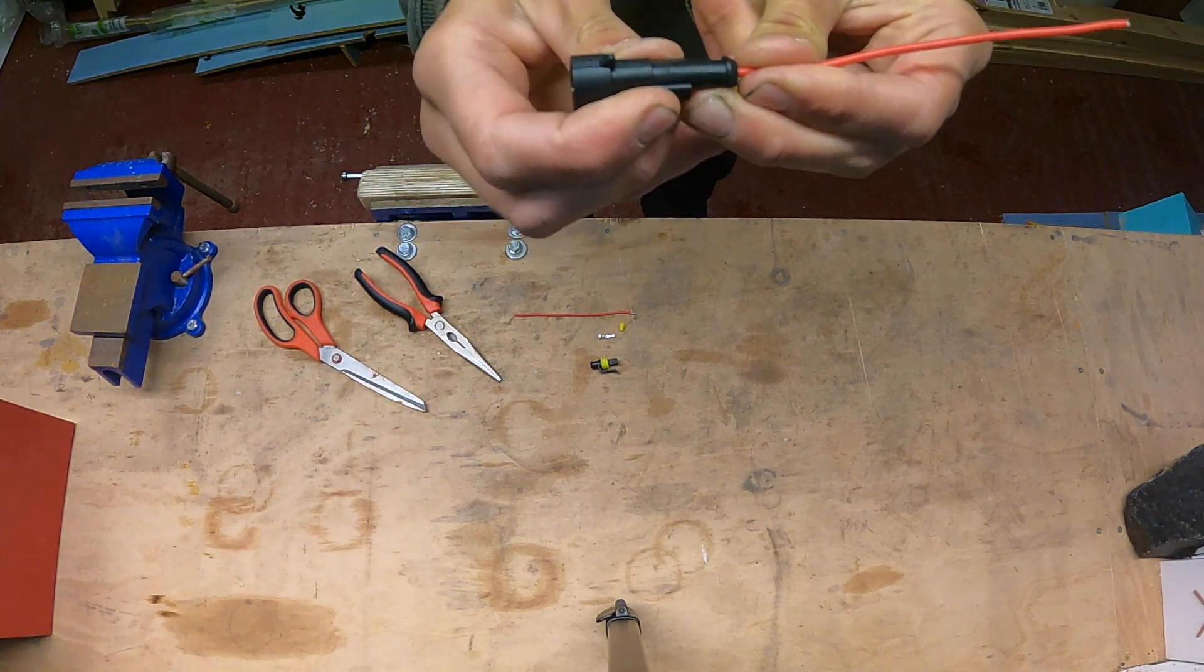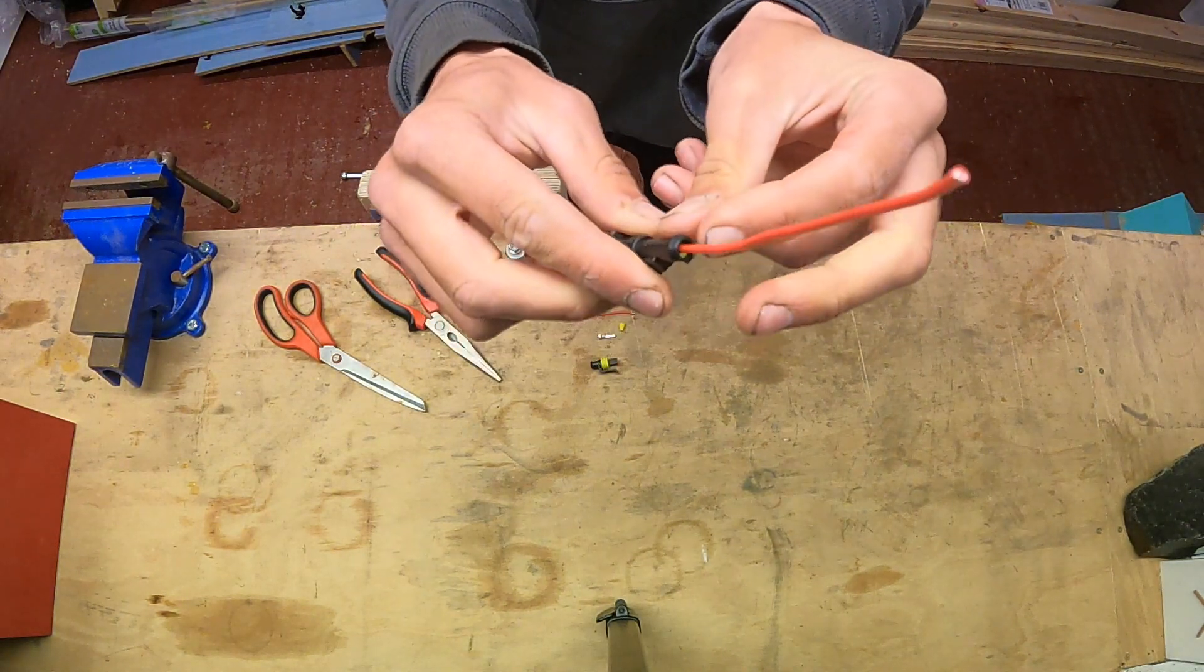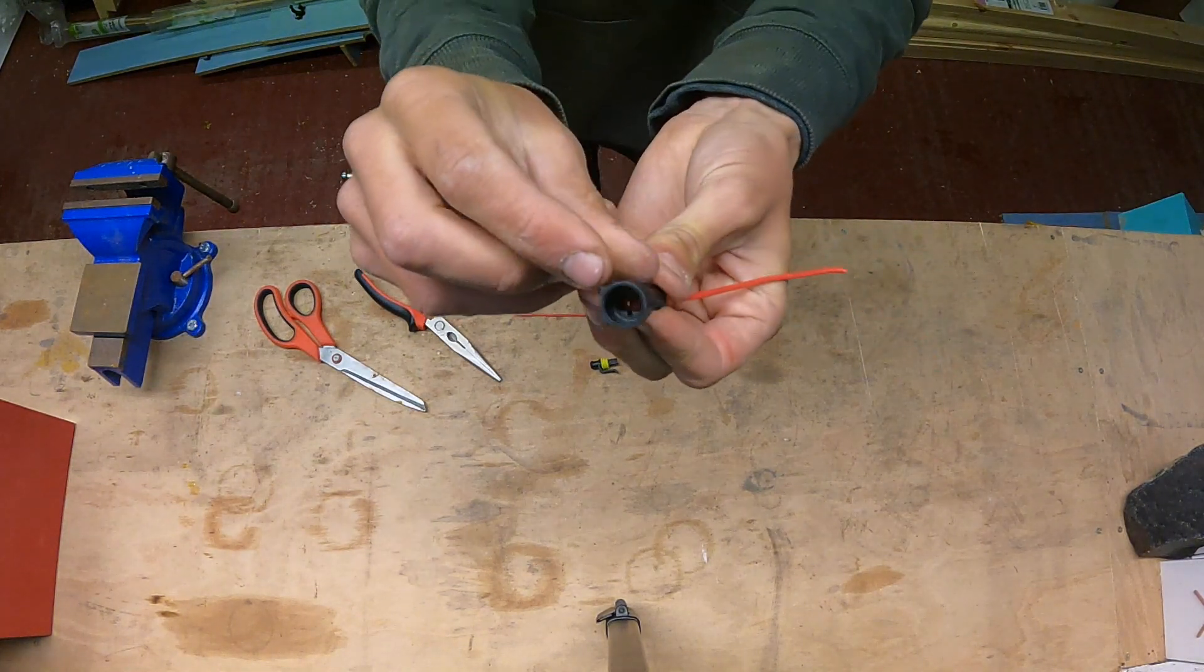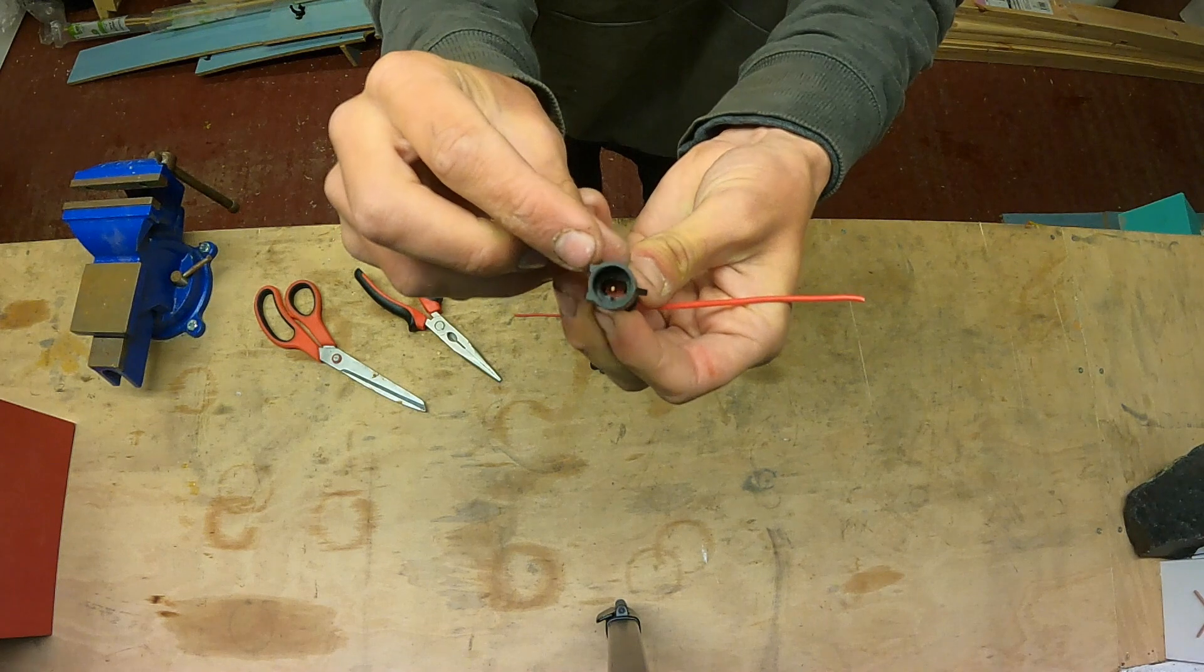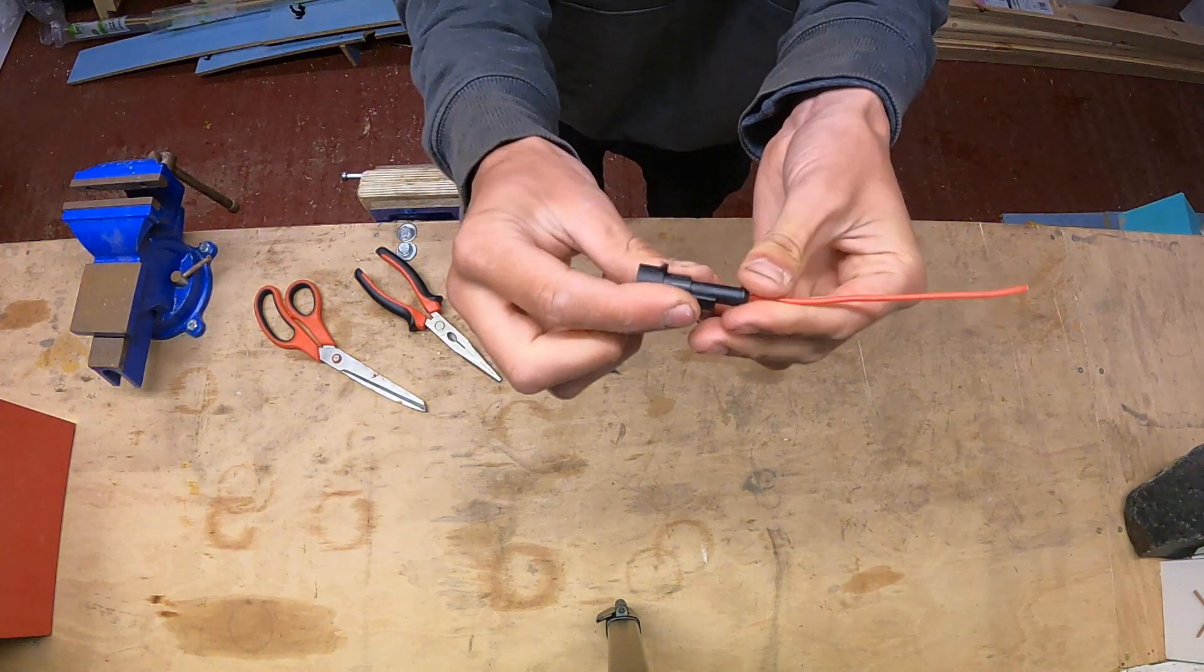As that clicks into place it locks it all into place. That's fixed now and the seal has gone into the back of the housing. If I look down the opening you can just see the terminal showing in there where it's pushed through. So that's one side complete.